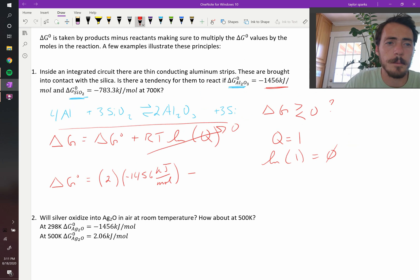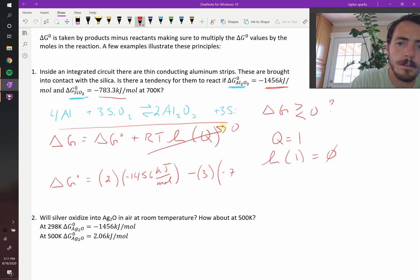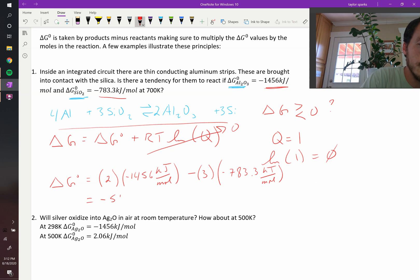The same thing on the other side, aluminum is in its elemental state, so we can ignore it. But it's going to be three multiplied by the value for silica, which is negative 783.3. That's kilojoules per mole as well. So when we take those and we do the math on them, we find out that the total change in free energy for this system is negative 562.1 kilojoules per mole at 700 Kelvin.